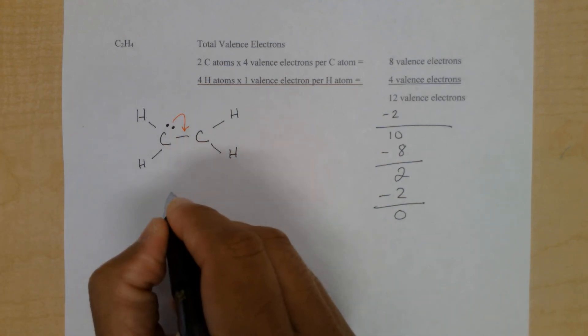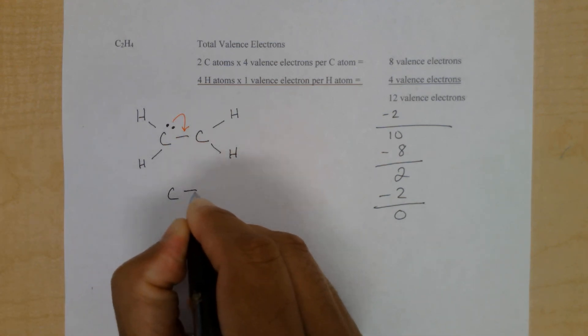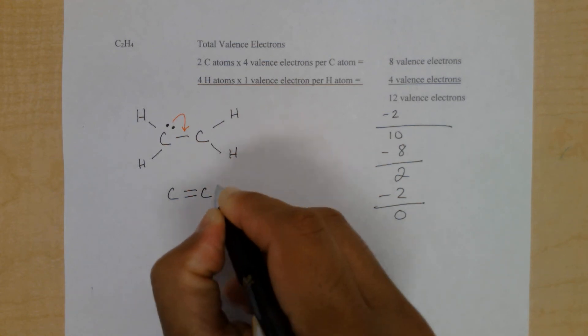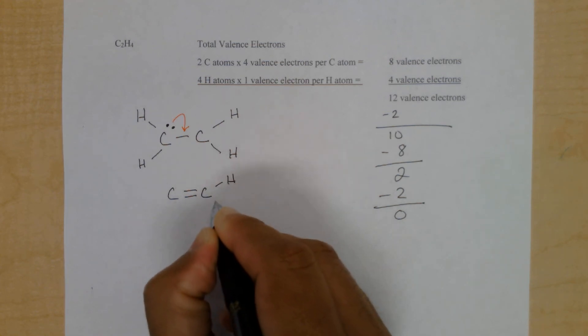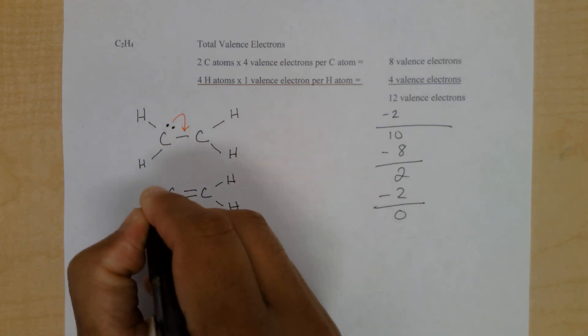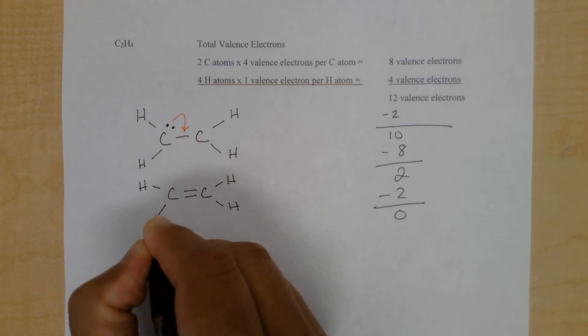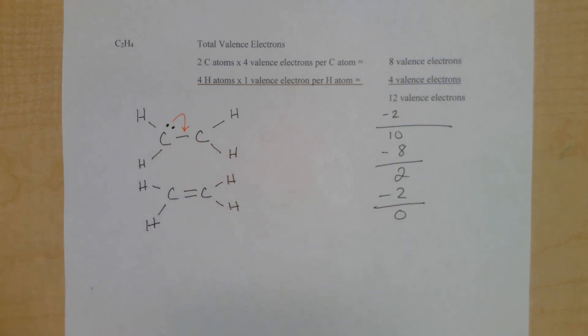So we can redraw this structure, showing the 2 bonds between the carbon atoms. Now we see the double bond. There are 2 shared pairs of electrons between the carbon atoms. And each carbon atom has 4 bonds, or 8 valence electrons, which satisfies the octet rule.